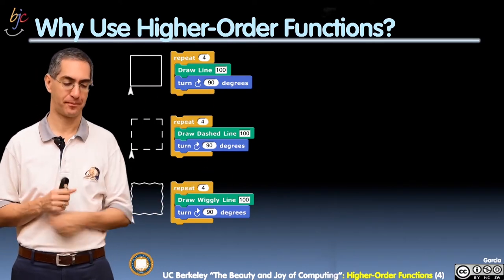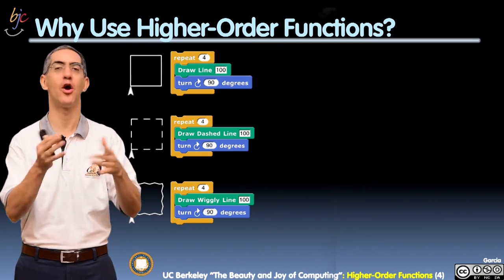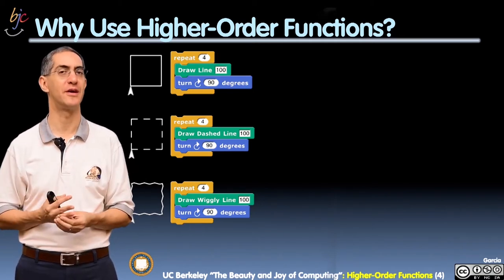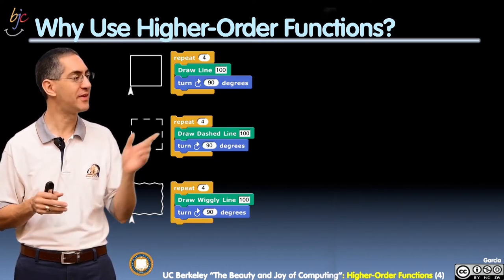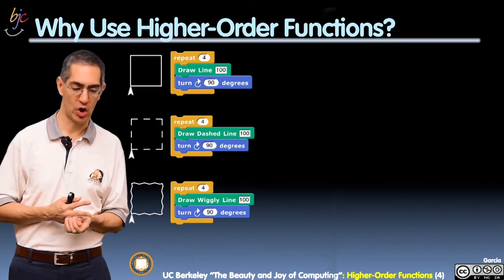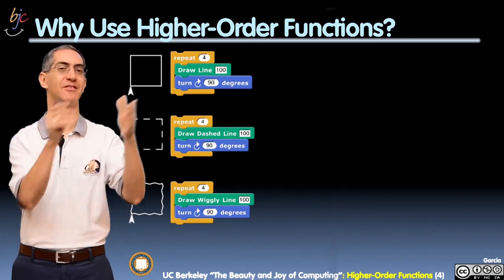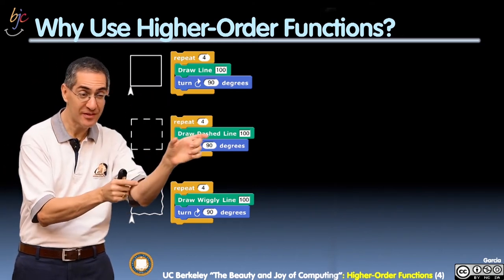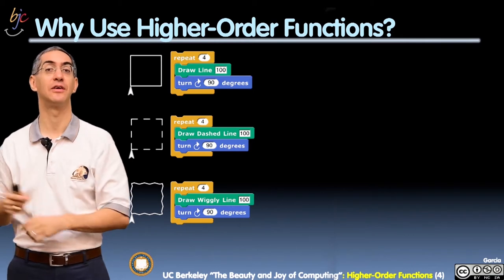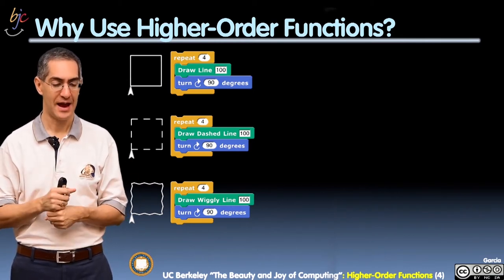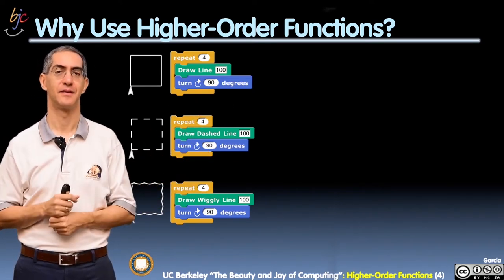So here are three clips of code. One says repeat four, draw a line 100, turn 90 degrees. Now we're hard coding the numbers 100 and 90 there, but just go with me here. And it draws a square, right? Nothing special. You've seen this before. And I say, you know what? I wouldn't mind drawing a square with a dashed line. So I write a block called draw a dashed line. And it takes whatever length it is and draws kind of three equal, it kind of divides into five pieces and then draws one, first one solid. The next is a gap. I just jump without pen down, then solid, then a gap, and then solid again. And that's reasonable.